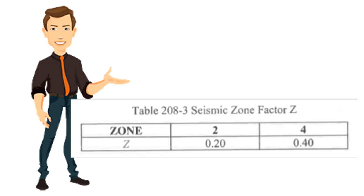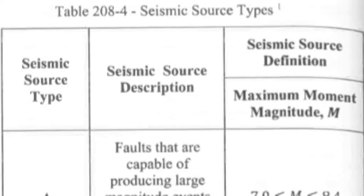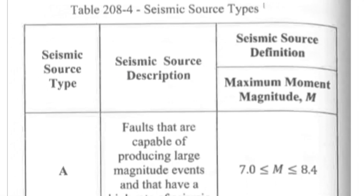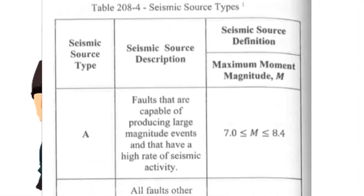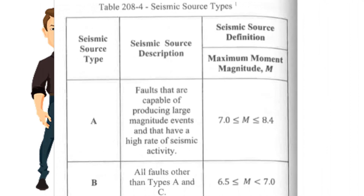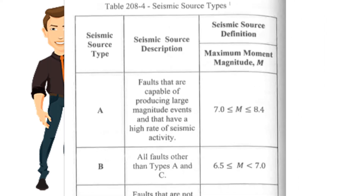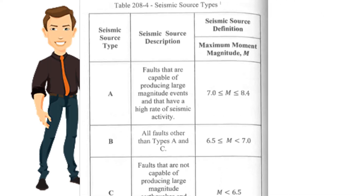The seismic zone factor can be found in Table 208-3, where Zone 2 has a seismic zone factor of 0.2 and Zone 4 has a seismic zone factor of 0.4. Next is the seismic source type, which can be A, B, or C, found in Table 208-4.